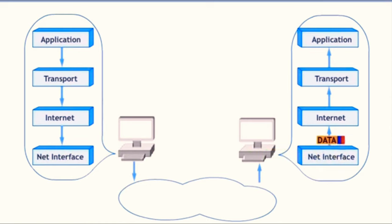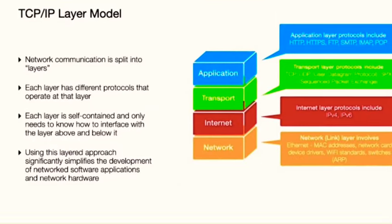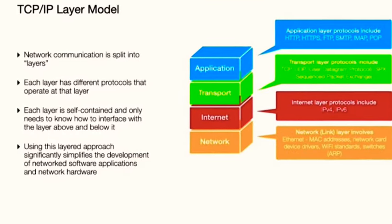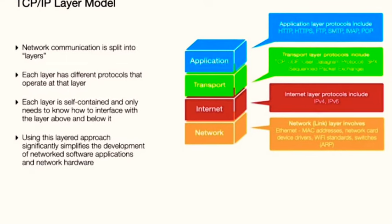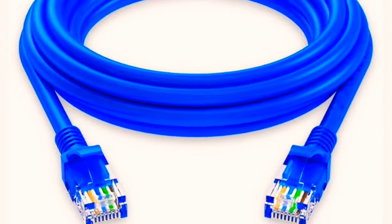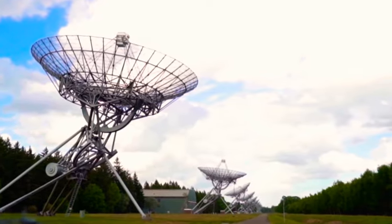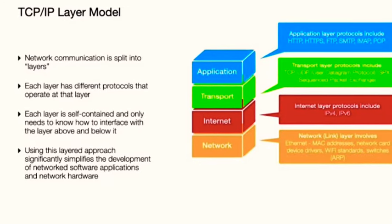The application layer is where human-computer interaction comes in, and it's responsible for processing application-specific functions. Now let's dive into these layers in detail. The network interface layer is the lowest layer of the TCP/IP model and is chiefly responsible for the physical transmission of data. It's all about how data moves from one device to another, whether it's through ethernet cables, wifi signals, or even satellite links — dealing with the nitty-gritty of hardware and physical network infrastructure.